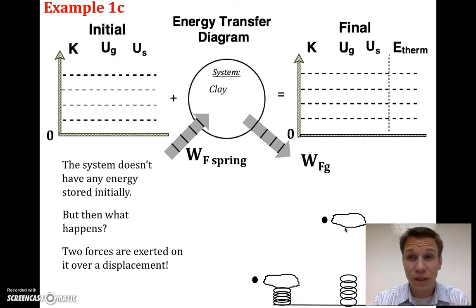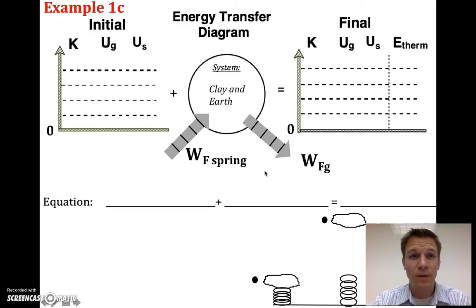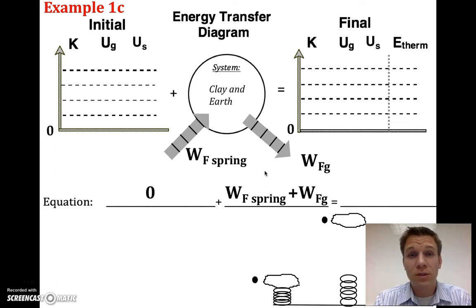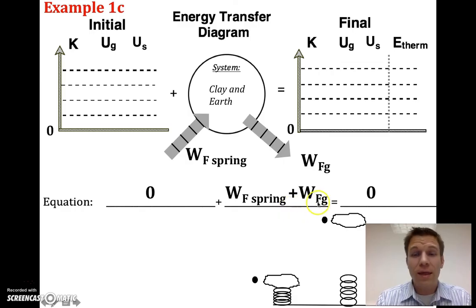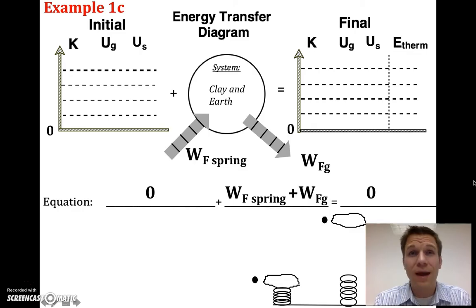Sometimes you have to work backwards: no energy at the end means since energy was added, the same amount must have been taken out. The equation is: zero plus W by the force of the spring plus W by the force of gravity equals zero. Both work terms are written as positive here; when you calculate them, the gravity term will come out negative. If you pre-insert a negative sign, you'll end up with a double negative when calculating, which gives a wrong answer.